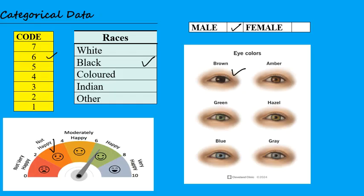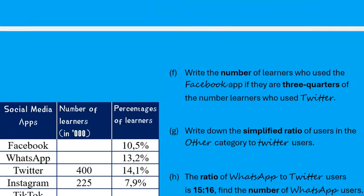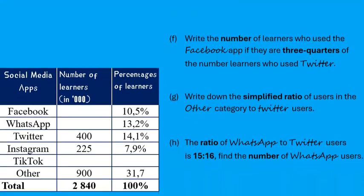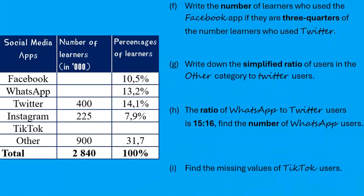Numerical data, on the other hand, is data that is represented as numbers. Let's move on to the last part of this example.